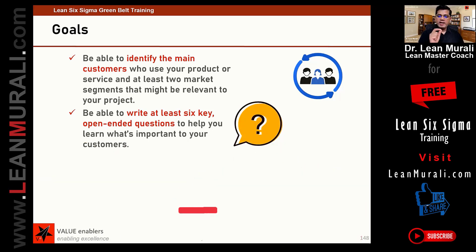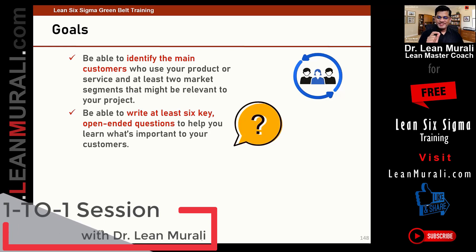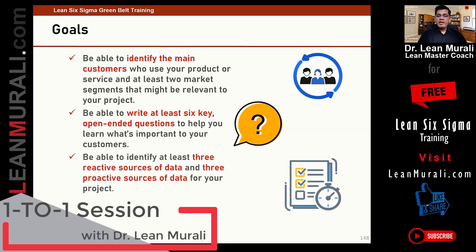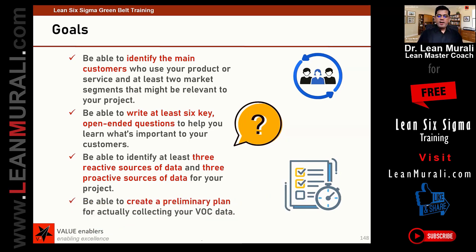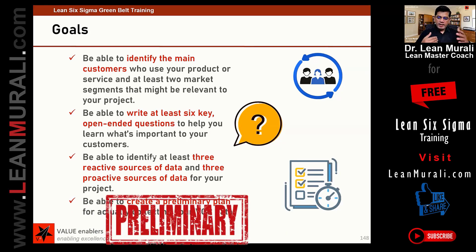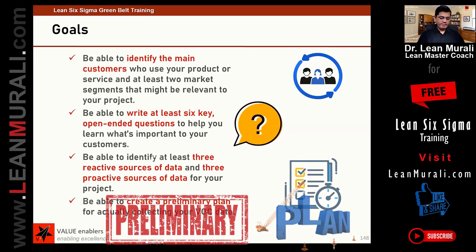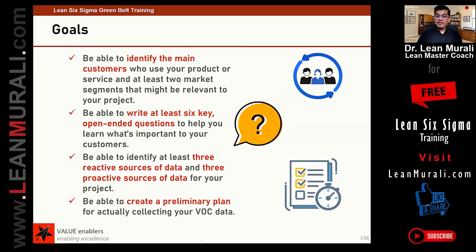Second, you should be able to write at least six key open-ended questions. Be able to identify at least three reactive sources and three proactive sources for your project. These are terminologies you would not have heard about in voice of customer, and I will talk about exactly what the reactive sources of data are and what proactive sources of data are. You also have to create a preliminary plan for collecting the voice of customer data.